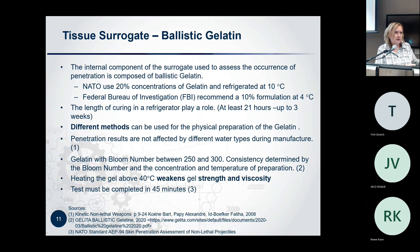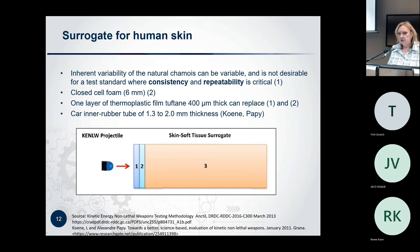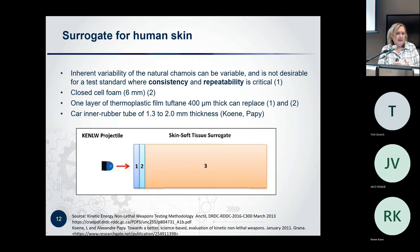The gelatin was our surrogate for flesh. Now we get to the surrogate for human skin. One example uses natural chamois as a layer and a six-millimeter thick closed cell foam. However, natural chamois differs in thickness and is problematic. We read about tuftain, which can replace both layers, which would be much easier, but we couldn't get hold of tuftain in South Africa — we contacted many companies. If any of you know a source, I would love to have some.